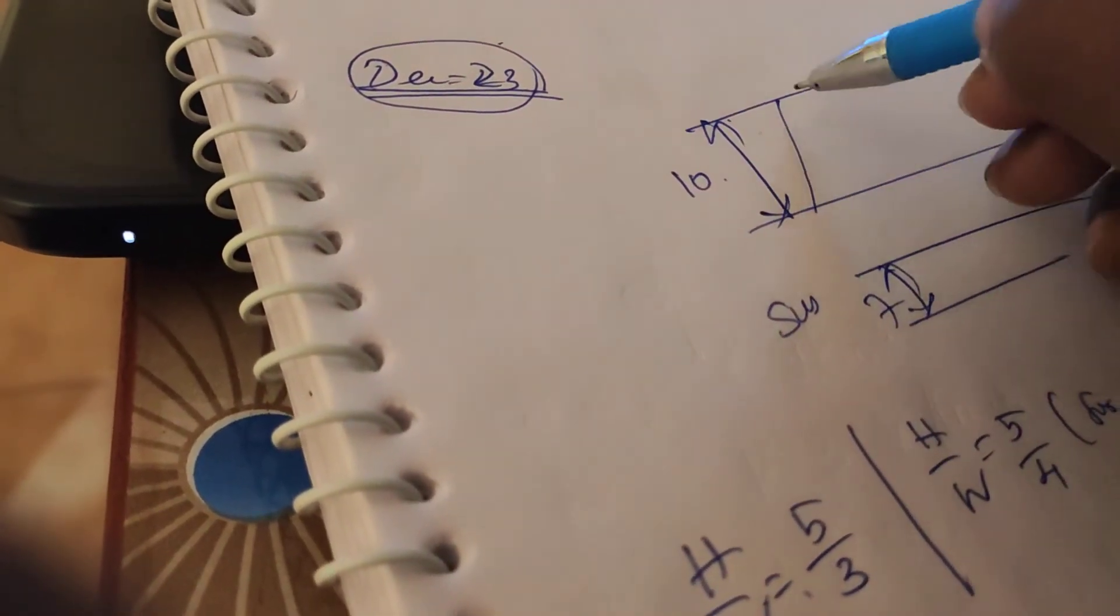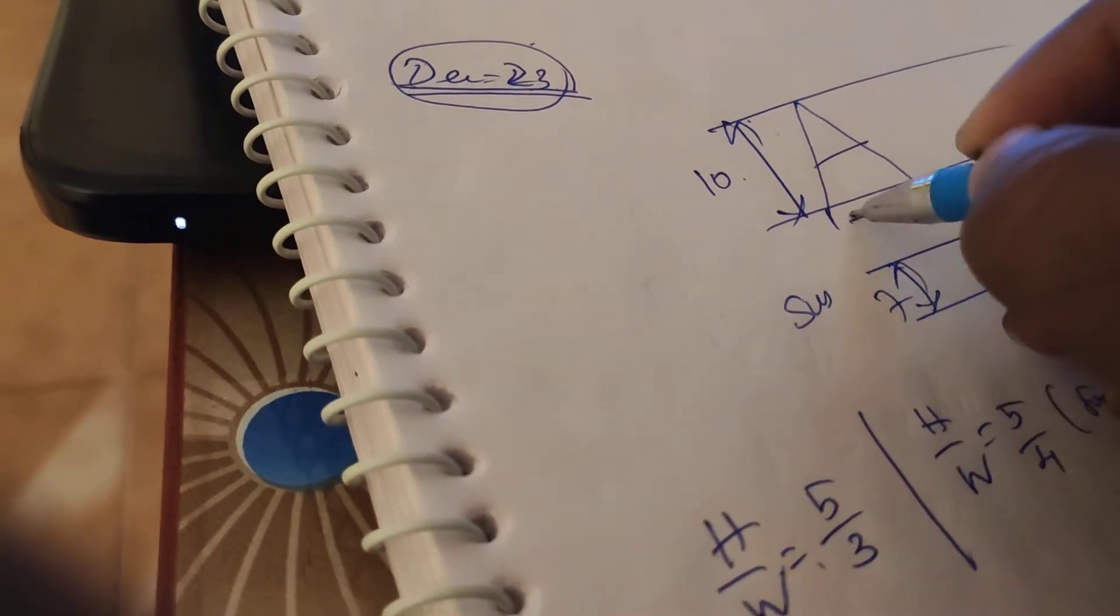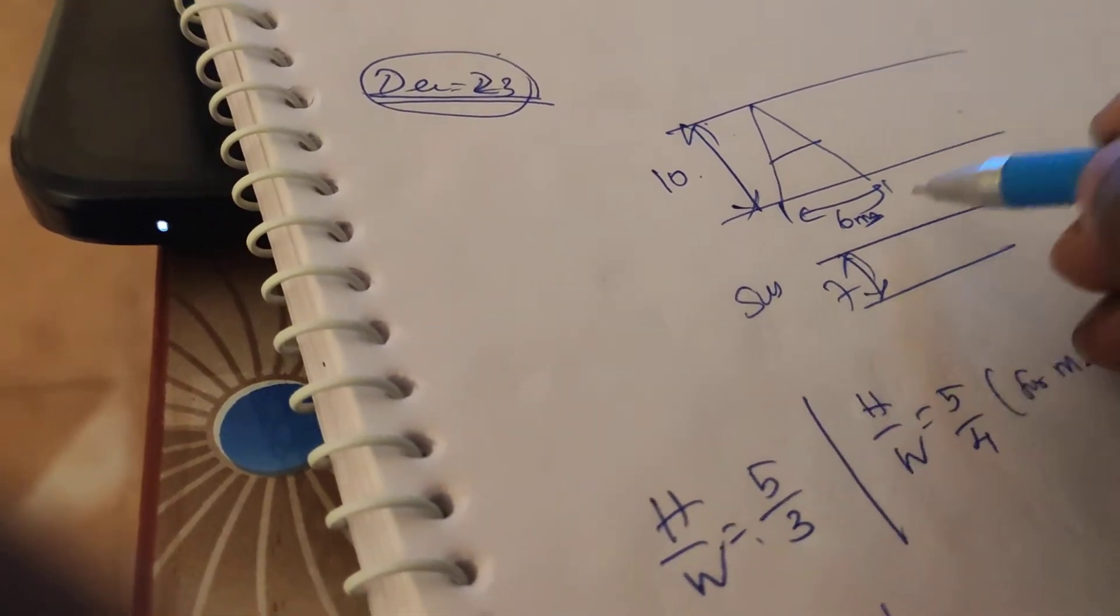So 1, 2, 6. So width of the letter is 6 mm. So suppose if I am writing the letter A, means the A letter should be completed here to here, the width is 6 mm.